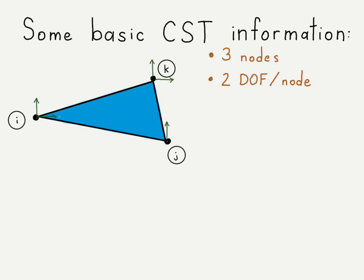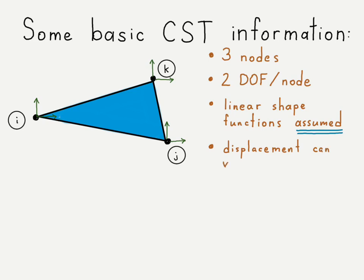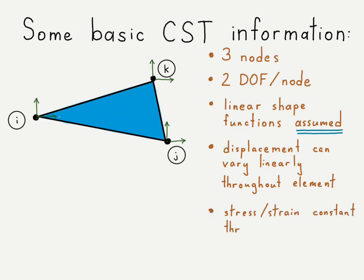At each node we have two degrees of freedom — only translational stiffness, no rotational stiffness. The shape functions are linear and they are assumed. This differs from line elements, where shape functions were based on mechanics theory — Hooke's law and the equation of the elastic curve for beam stiffness. For these elements the shape functions are assumed, meaning we assume the displacement that could take place throughout the element. Since displacement varies linearly, the strain — being the derivative of displacement — can only be constant throughout the element, hence the name constant strain triangle.